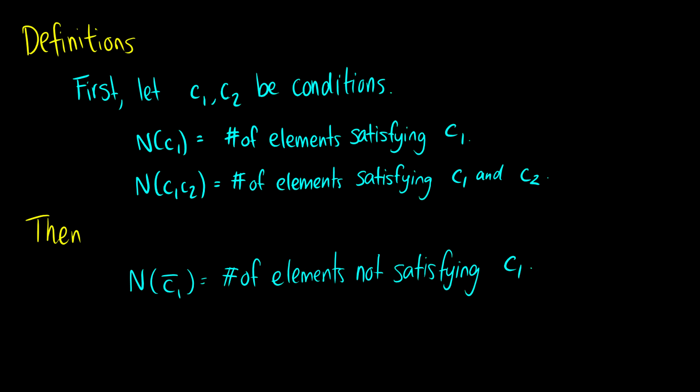If we have two conditions, n(C1, C2), then these are the number of elements that satisfy both C1 and C2. We can also have complement laws, which are very important for inclusion-exclusion. If you have n(C1 bar), that is the number of elements that don't satisfy C1.